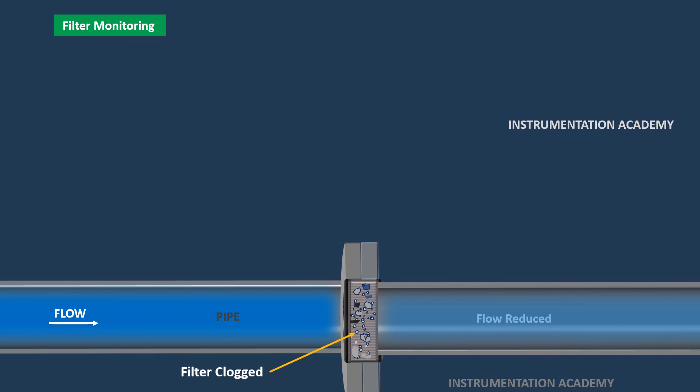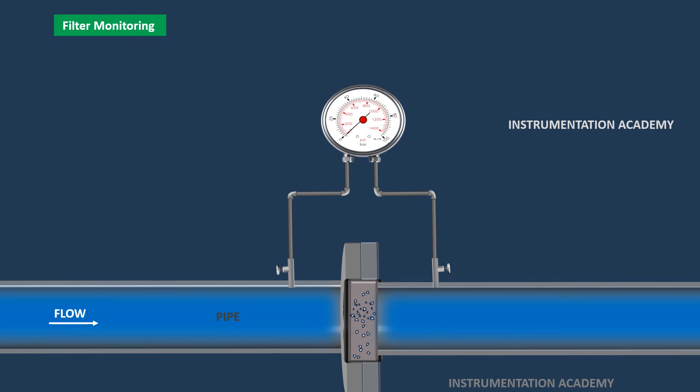To monitor the filter's condition, a differential pressure gauge is used. Pressure taps are placed at two points, one before the filter and one after the filter. These taps are connected to the differential pressure gauge, which continuously measures the pressure difference between the two sides of the filter.